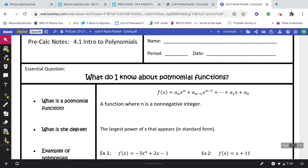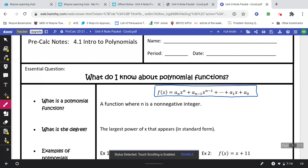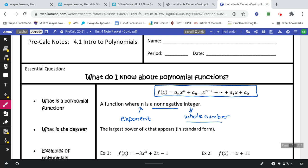A polynomial function, this is an example of one up here at the top, where your a's are just your numbers, your n's are your exponents. So the technical definition: a function where n, which is your exponent, is a non-negative, so zero or higher, integer—and integer is a whole number. So it's a non-negative whole number.